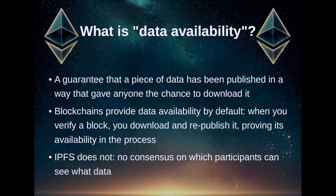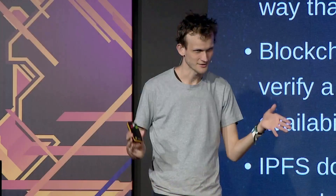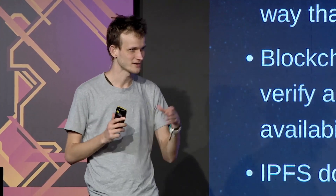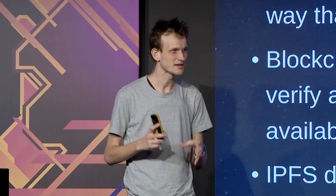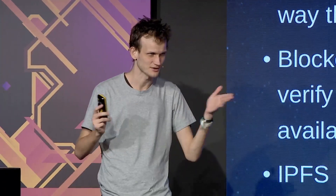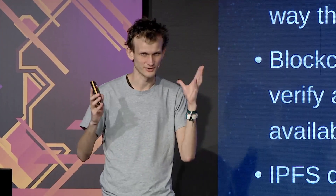Data availability at the core is a guarantee that some piece of data — represented by something smaller like a hash — has been published in such a way that gave anyone the chance to download it. We can be sure that whoever wanted to download it during some long enough historical time span was actually able to do so.